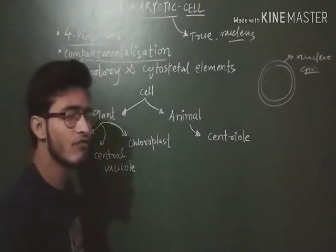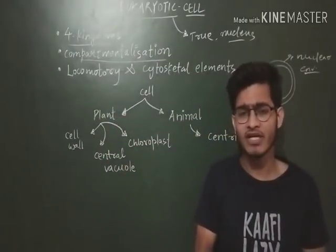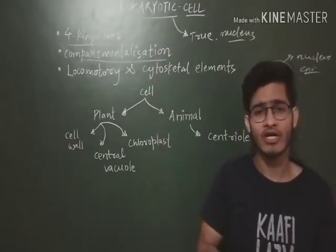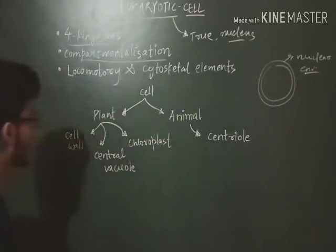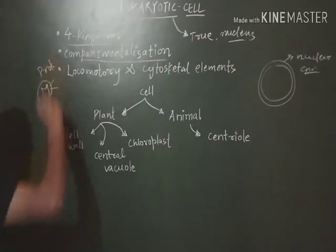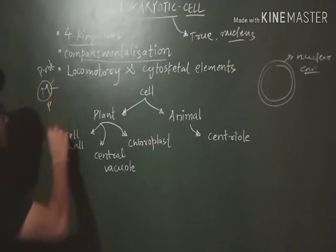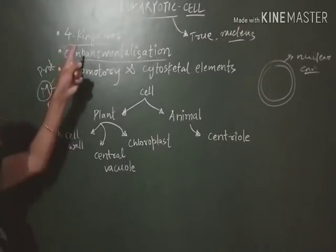Four of the five kingdoms in R.H. Whittaker's classification are eukaryotic in nature, except bacteria. The five kingdoms are: Monera, which includes Archaebacteria and Eubacteria — since they are bacteria, they are prokaryotic. After Monera, there is Protista, then Fungi, then Plantae, then Animalia. Protista are unicellular but eukaryotic.